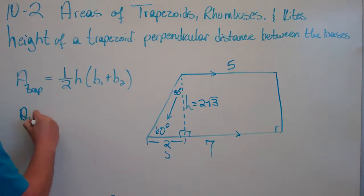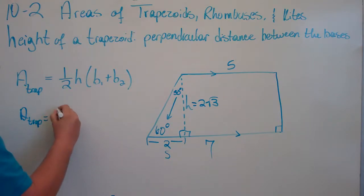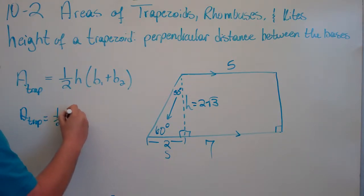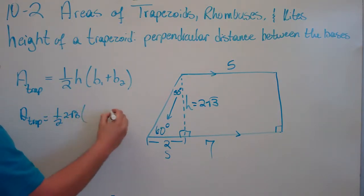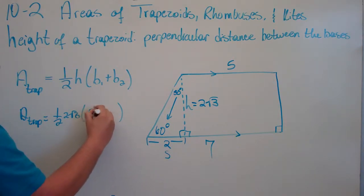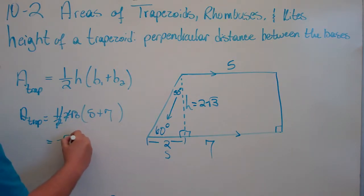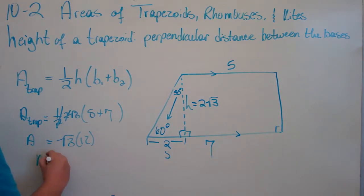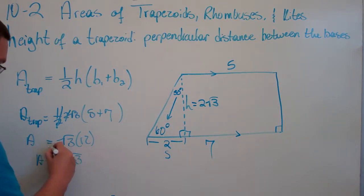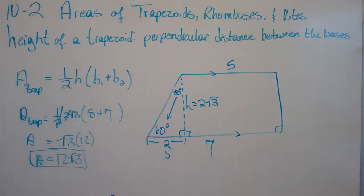The area of our trapezoid equals one-half the height, which is 2 square root of 3, times the sum of the bases, which is 5 plus 7. The one-half cancels the 2, giving us the square root of 3 times 12. So the area of that trapezoid is 12 times the square root of 3.